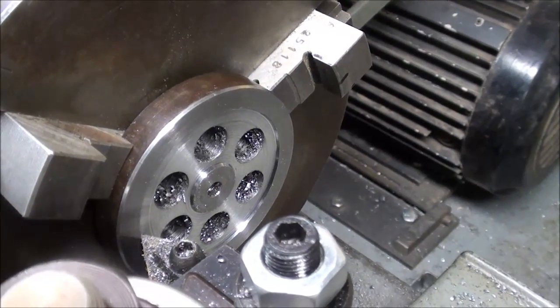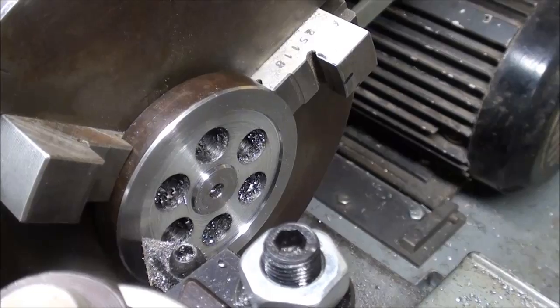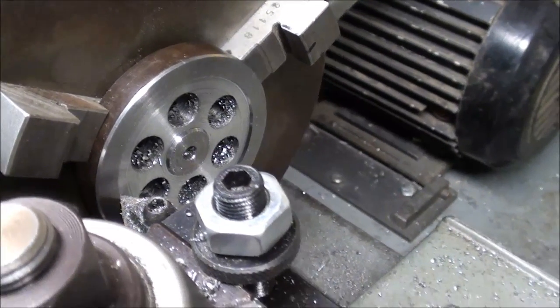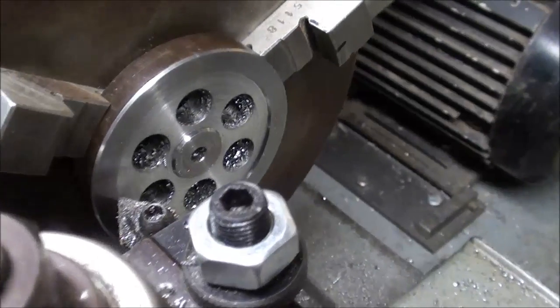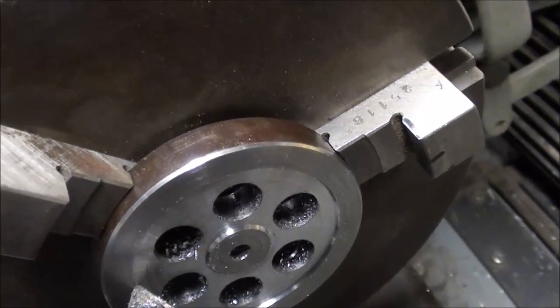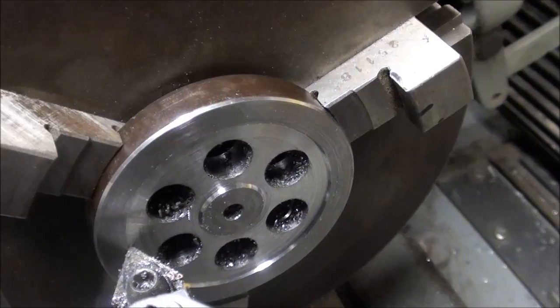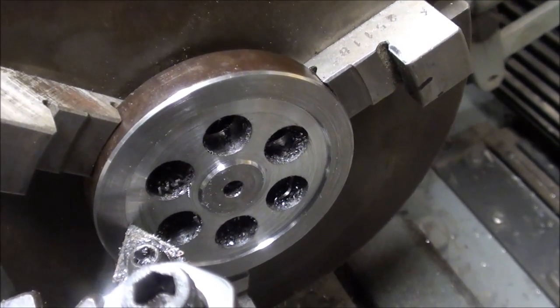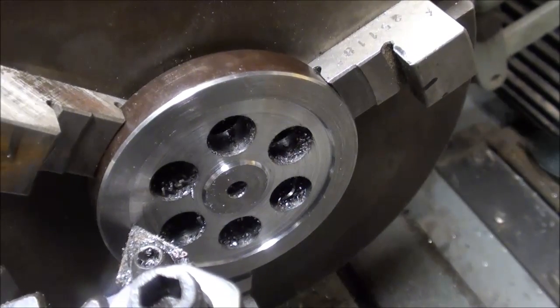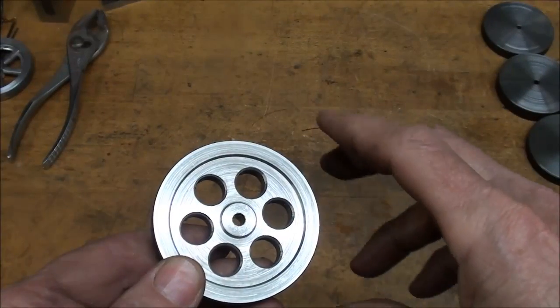This is my setup on the Atlas lathe to make that recess. I'm using this type of tool holder in the facing position. I left about a quarter inch rim and I went in about a sixteenth of an inch toward the headstock. And there it is.